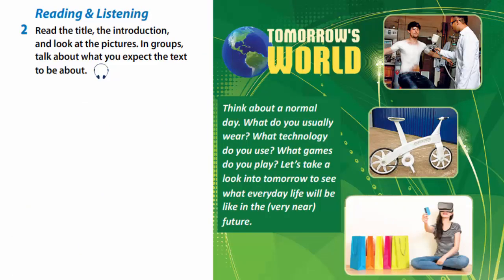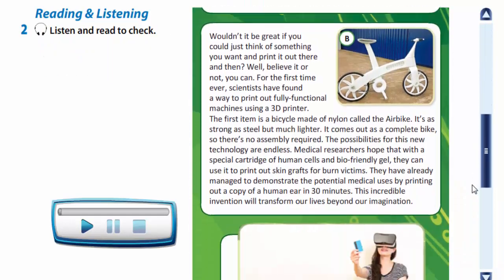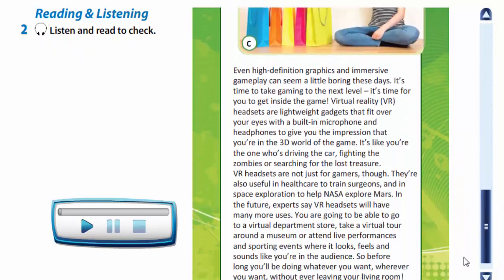In exercise two, you are to read the title, the introduction and look at the pictures. You are to talk about what you expect the text to be about. I expect the text to be about technology of the future and how it will make life easier for people. Now let's read the text and watch the video.